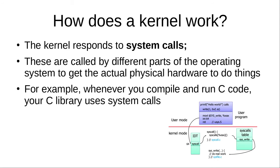So how does a kernel actually work? Well, most kernels work by responding to system calls. These are called by different parts of the operating system to get the actual physical hardware to do things. An example of this is your C library — it's up to your C library to give the appropriate kernel system calls to make the computer actually run it. That is a gross oversimplification of the process, and if you want to learn more, I have a page linked in the description that explains the process in far more detail.